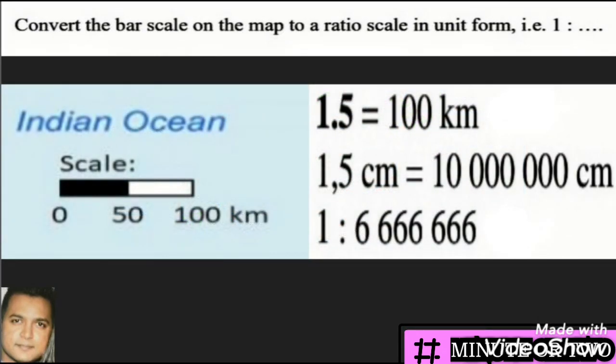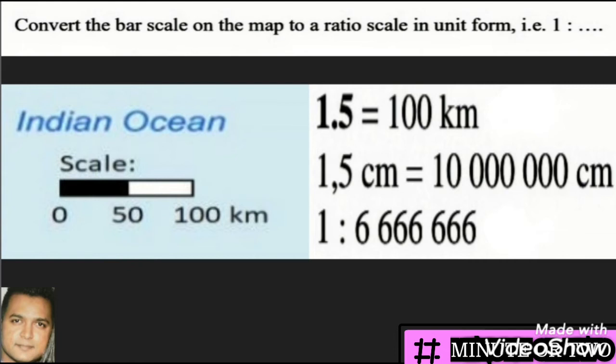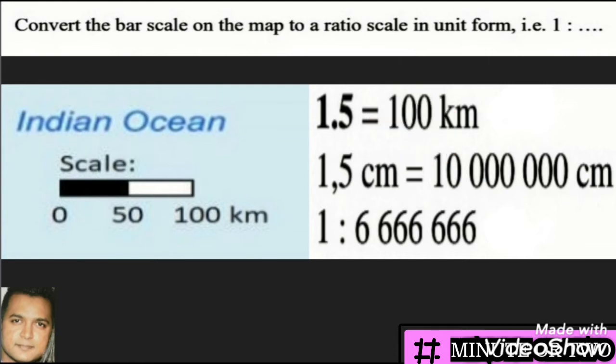What you see on the left-hand side is the bar scale that I've made bigger so you can see what we are doing with it. Firstly, we need to measure the size of the bar using our rulers. Measuring it on the booklet, you will find it is 1.5 centimeters. This means the length of the bar scale is equal to 100 kilometers.